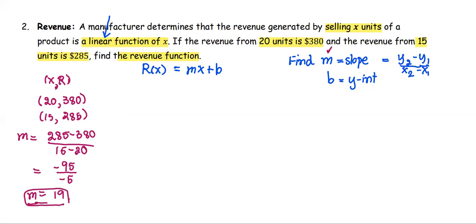Next, we are going to find the y-intercept b. Based on the information, we have two ordered pairs. We just use one of these two ordered pairs to find the b value. Taking the ordered pair (20, 380), we set up the equation: 380 equals 19 multiplied by 20, plus b.